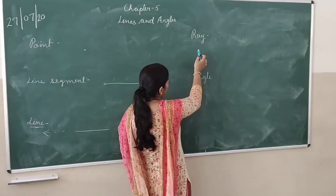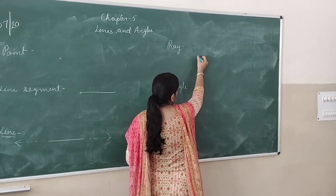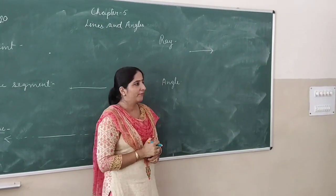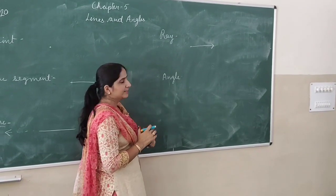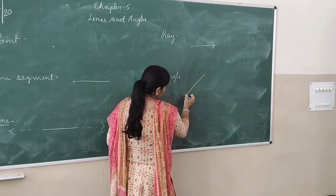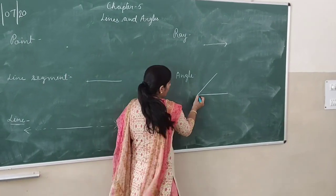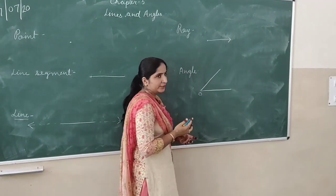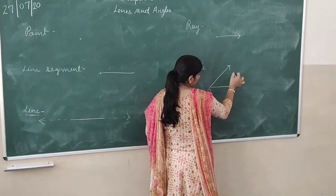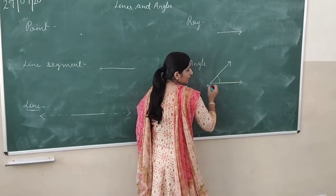Now let us come to Ray. Remember what is a Ray? If we take a point and extend it only on one side, then this is known as a Ray. Now next is Angle. An angle is formed when two lines or rays meet at a common point, say O. If they meet at a common point, then the angle is formed at O.